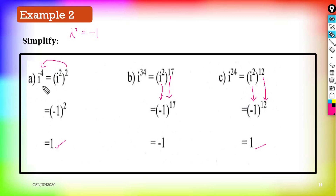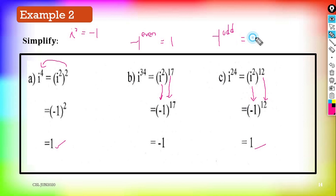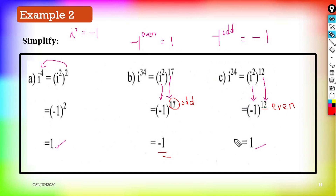We can conclude: if (−1) is raised to an even number, you get 1. If (−1) is raised to an odd number, you get negative 1. Let's verify: (−1)² — 2 is even, so the answer is positive 1. (−1)^17 — 17 is odd, so you get negative 1. (−1)^12 — 12 is even, so you get 1.